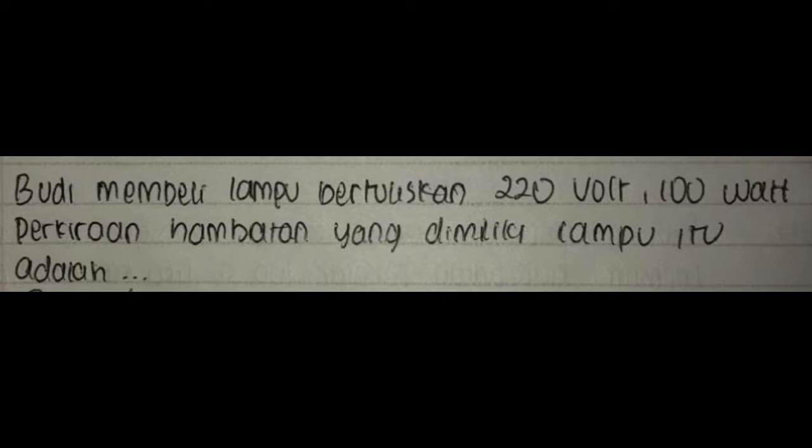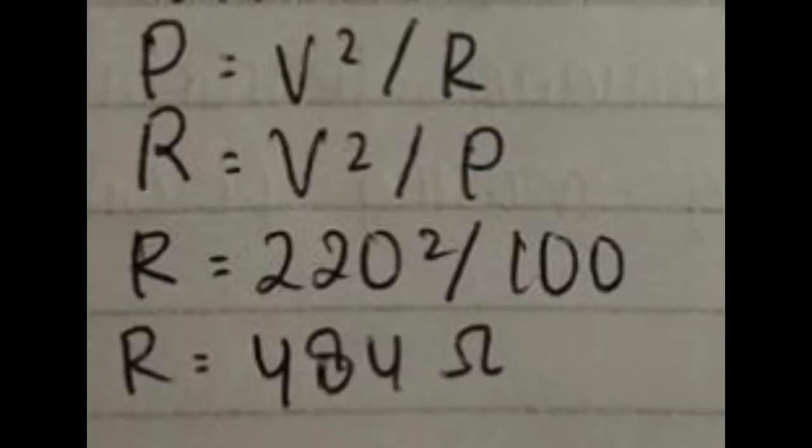Soal 16, Budi membeli lampu bertuliskan 220 volt 100 watt. Perkiraan hambatan yang dimiliki lampu itu adalah: